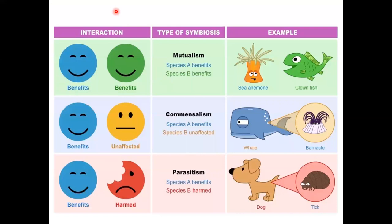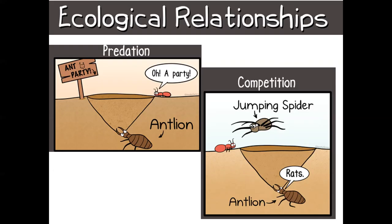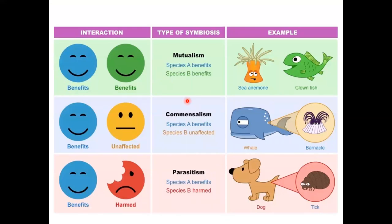There are three types of symbiotic interactions, still falling under ecological relationships. This chart helps you understand these three symbiotic relationships. At the top, we have mutualism — there are two happy faces because both species get something out of the relationship. Species A gives something to species B, and species B gives something back. The famous example is Nemo: the clownfish lives in the anemone, the anemone lets the clownfish sting its enemies, and the clownfish makes sure nobody eats the anemone.